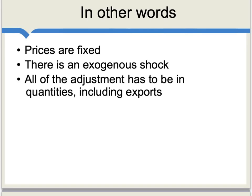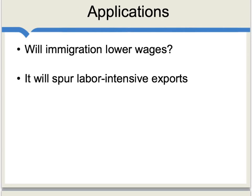To review: prices are fixed because they're fixed in global markets and we're talking about a small country. There is then an exogenous shock — consider that to be the arrival of either labor or capital. Since prices cannot adjust, all of the adjustment has to be in quantities, which of course includes output. Furthermore, through a Heckscher-Ohlin mechanism, this will include exports too. Now that the country is more labor-intensive, they are more likely to be exporting labor-intensive goods. The Rybczynski theorem helps us understand that when economic prices cannot adjust, quantities will adjust instead.